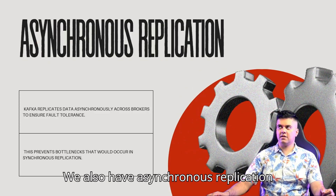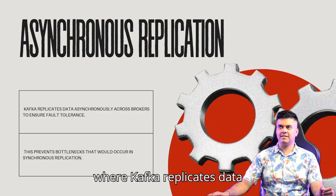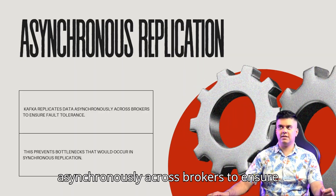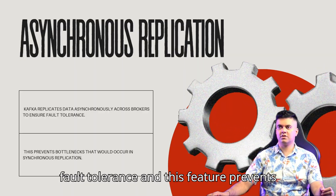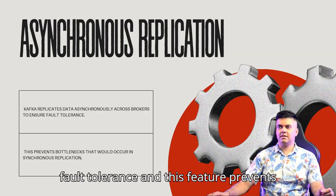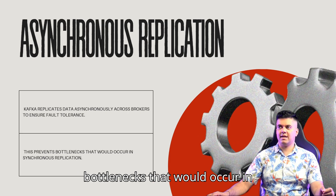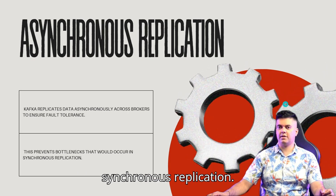We also have asynchronous replication, where Kafka replicates data asynchronously across brokers to ensure fault tolerance. This feature prevents bottlenecks that would occur with synchronous replication.